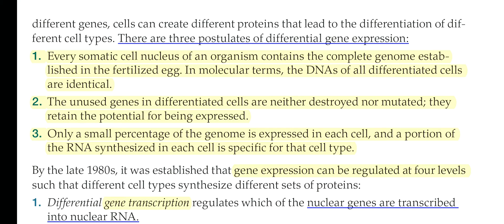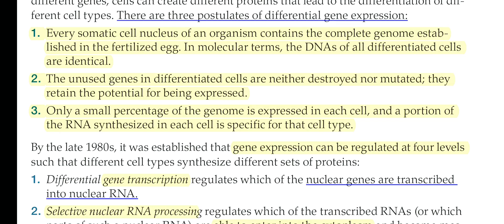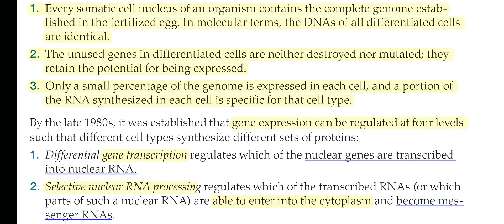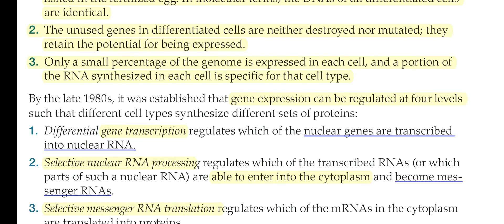Every somatic cell nucleus of an organism contains the complete genome established in the fertilized egg. In molecular terms, from the day the zygote forms until the whole organism is formed with trillions of cells, each cell possesses the same amount of genome found in the zygote stage. That's why all the DNA of differentiated cells are identical. The second point is that unused genes in differentiated cells are neither destroyed nor mutated — they retain the potential for being expressed. Silenced genes still have the capability to be expressed.